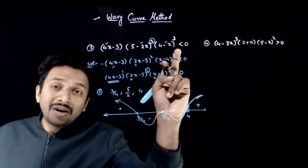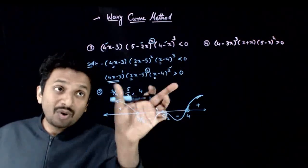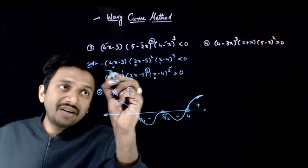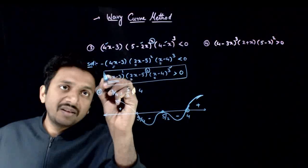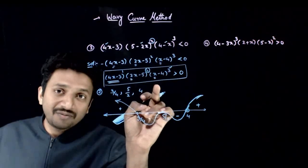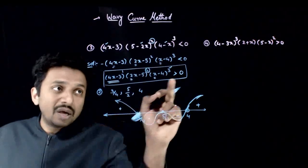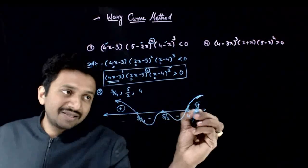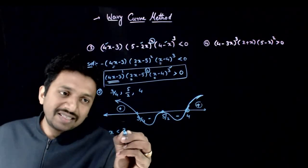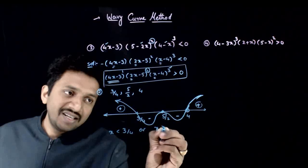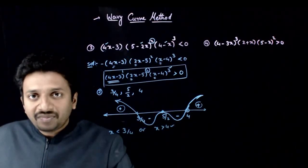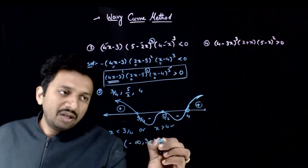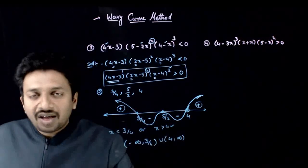We want this expression to be greater than 0, so we want the positive intervals. We are solving for the transformed inequality (greater than 0), not the original. The answer is: x belongs to (−∞, 3/4) union (4, ∞).